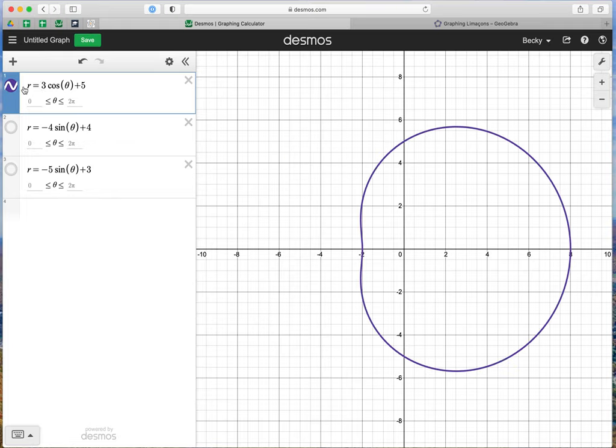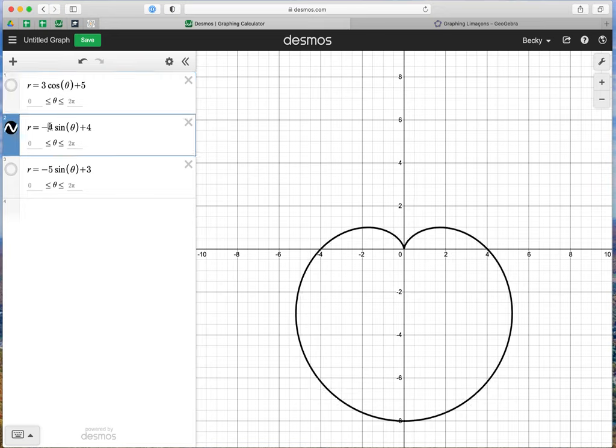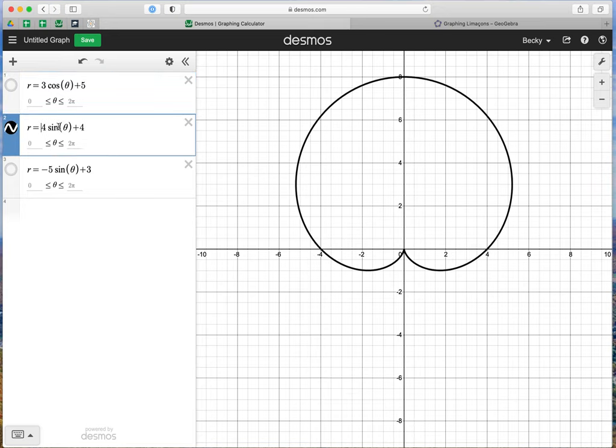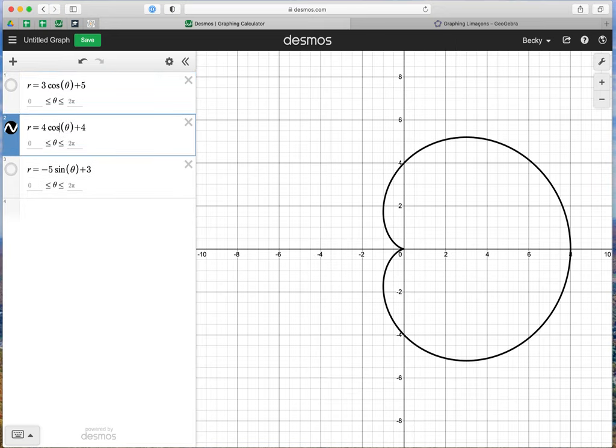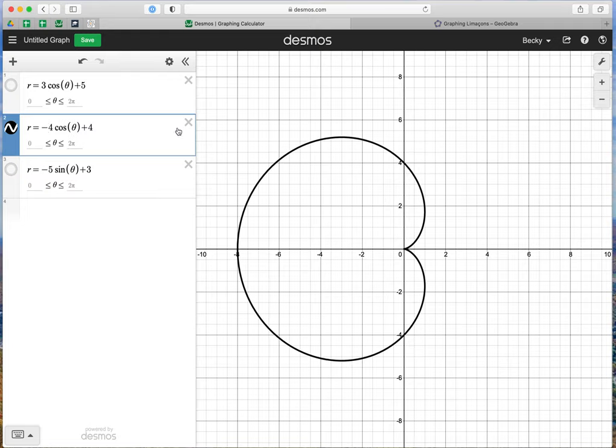Let's do the same thing for the cardioid. I'm going to make this 4 cosine theta plus 4, which is the graph we did together by hand. And now if we make it negative 4, instead of being on the right side, we would expect it to go to the left side. So negative A, the majority is on the left side.